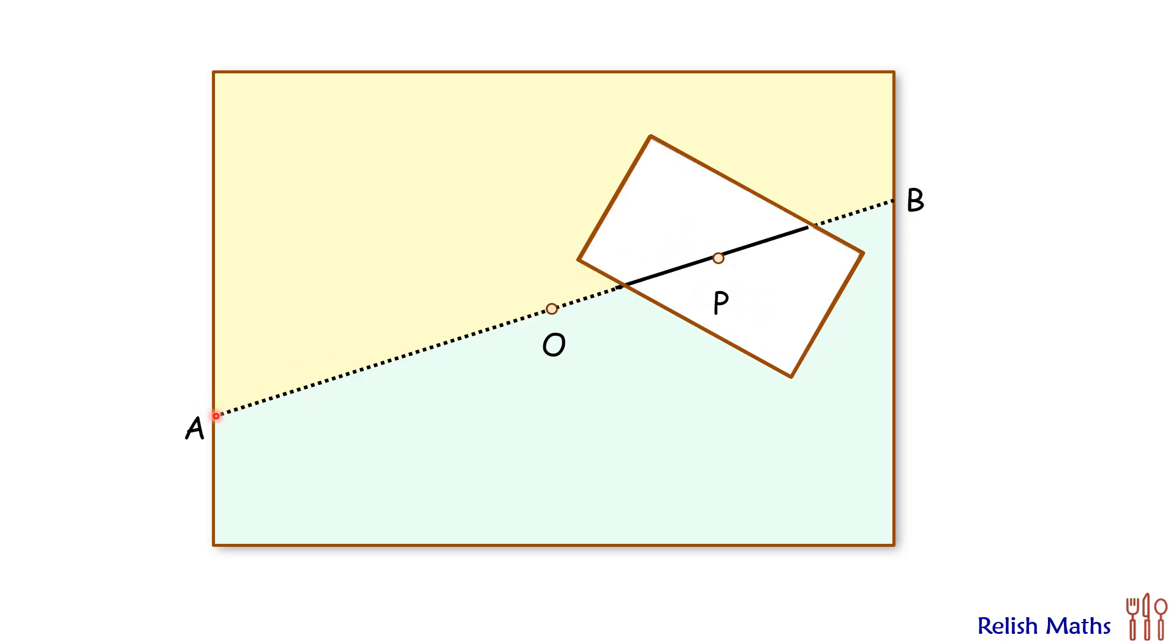And thus this AB is the line which will divide the sheet into two pieces with equal areas. And that's our answer. I hope you enjoyed the solution. I will see you in the next video. Till then, tata bye bye.